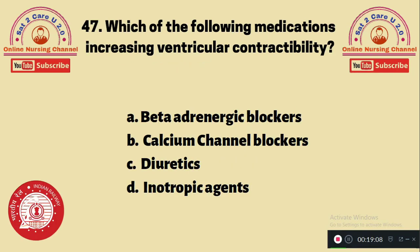Question 47: Which of the following medications increases ventricular contractility? A. Beta adrenergic blocker, B. Calcium channel blockers, C. Diuretics, D. Inotropic agent. The drug which increases ventricular contractility is the inotropic agent, because it increases ventricular contraction, which raises cardiac output. The answer is D.